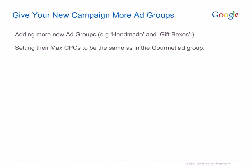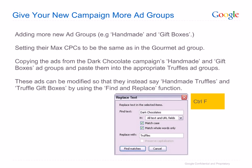In order to expand the campaign, in this example we add two new ad groups: Handmade and Gift Boxes. Their Max CPCs are set to be the same as in the Gourmet ad group. The ads are copied from the Dark Chocolate Campaign's Handmade and Gift Boxes ad groups and pasted into the appropriate Truffles ad groups. These ads can be modified so that they instead say Handmade Truffles and Truffle Gift Boxes. Use Find and Replace by pressing Ctrl+F. The same operation can be conducted with keywords.